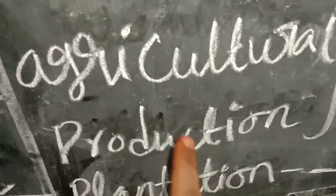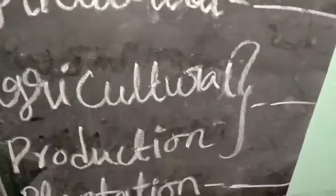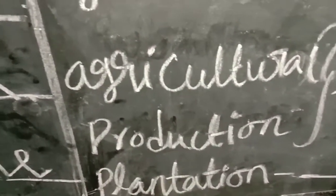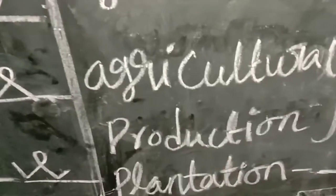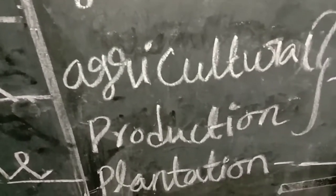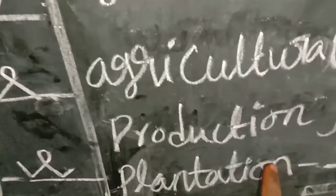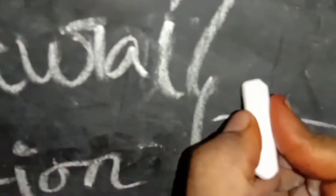This is an outline class. Let's look at the production. This is a plantation. Let's look at the production — so it's agricultural production. The agriculture is called agriculture. Then we went to agriculture. Agricultural production.